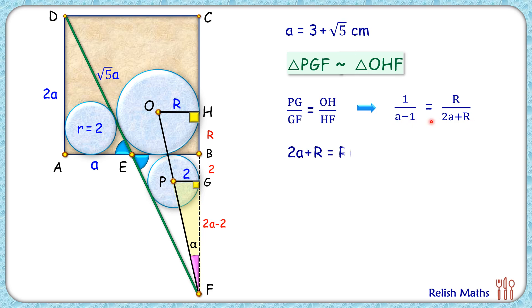Now simplifying this by cross multiplication, we'll get this equation formed. Solving this equation for R, we'll get R as 2a upon a - 2. Putting the value of a as 3 + √5, we'll get the value of R as 2 times (3 + √5) upon (3 + √5 - 2).